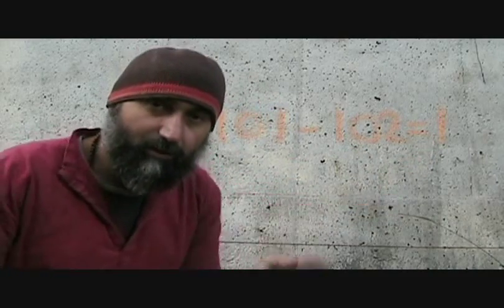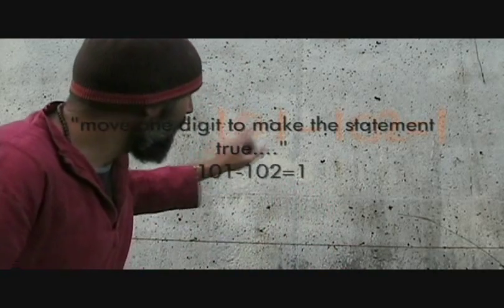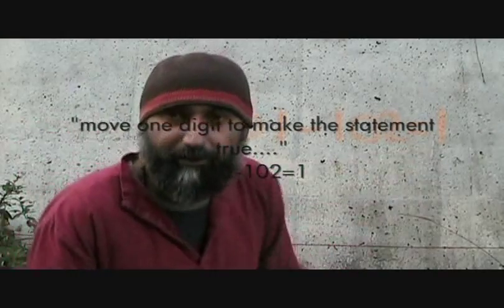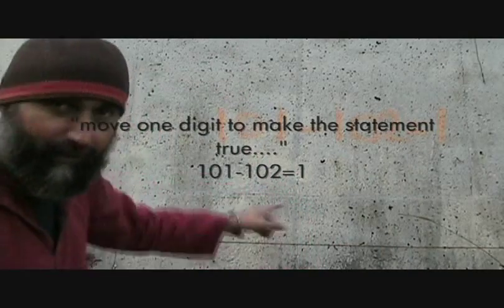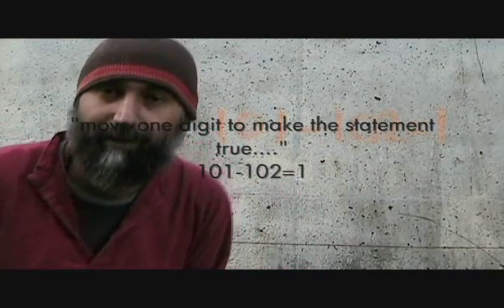So his question was, how do you move one of these numbers so this equation becomes true, okay? 101 minus 102 is equal to one.